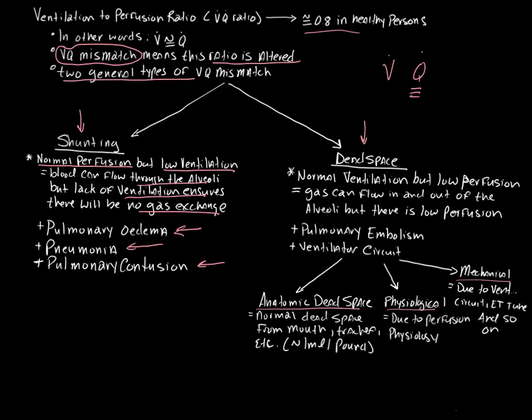Dead space, however, is normal ventilation. You can get gas in an alveoli, but there is low perfusion. What do you suppose the classic example of dead space would be? Pulmonary embolism, classic. You have decreased blood flow, but you can still ventilate.